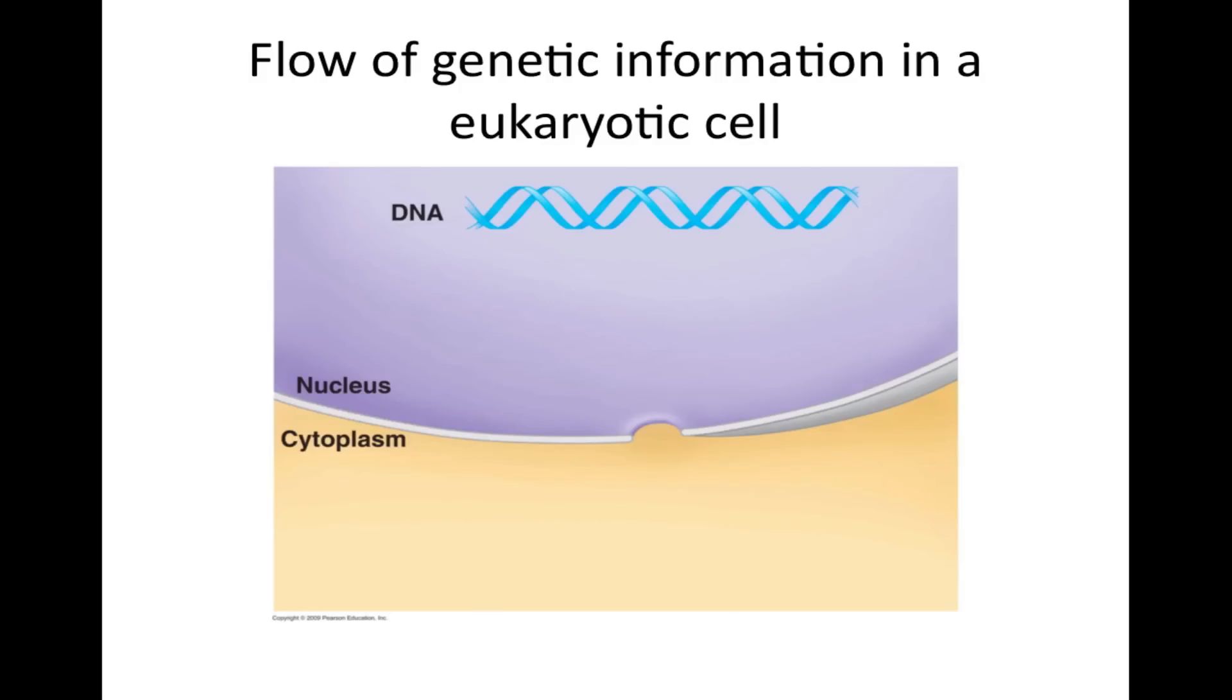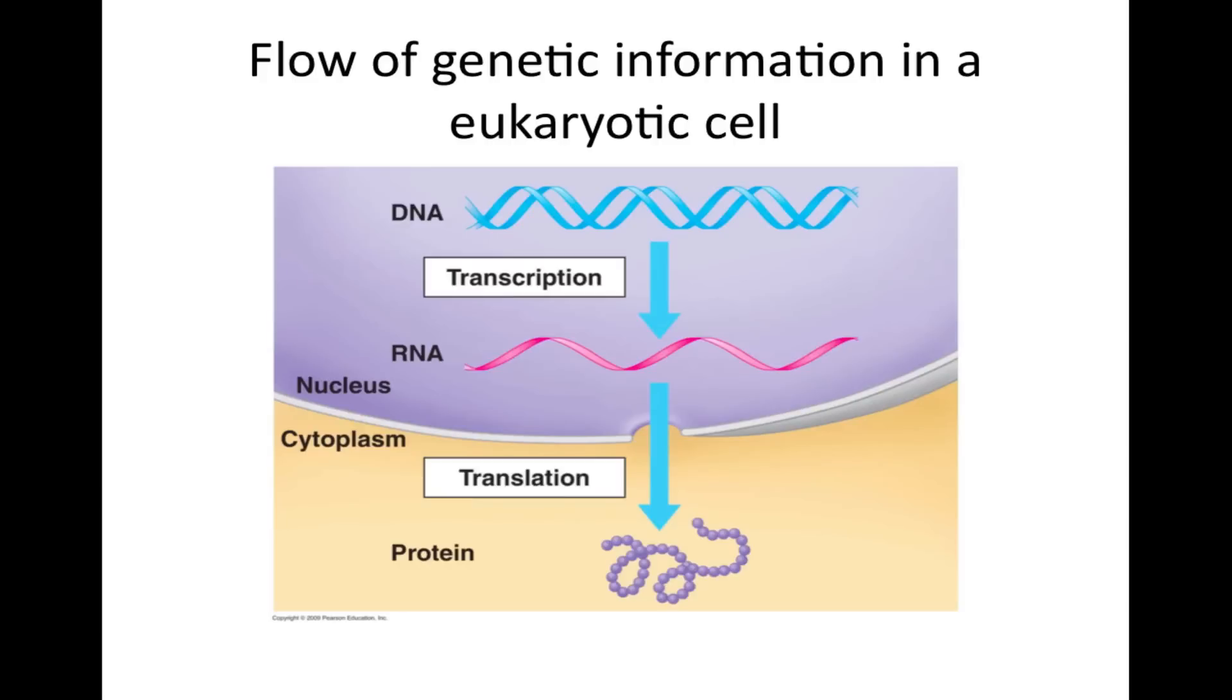The flow of genetic information in a eukaryotic cell. DNA is found inside the nucleus and undergoes transcription, a process that transfers genetic information from DNA into an RNA molecule. The single-stranded RNA molecule will travel out of the nucleus and into the cytoplasm for translation of RNA to the specific protein the RNA coded for.